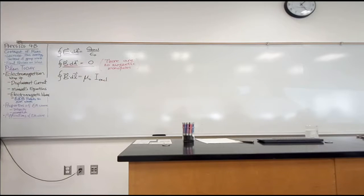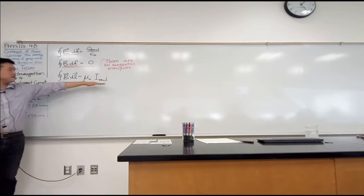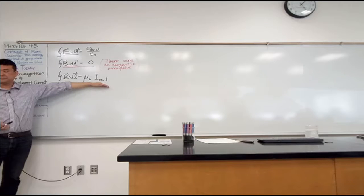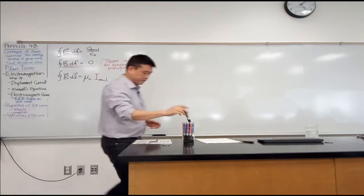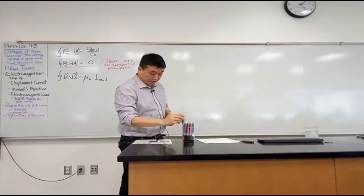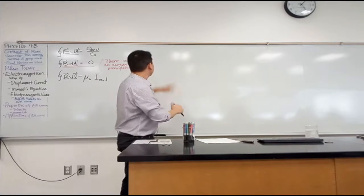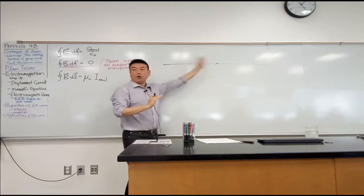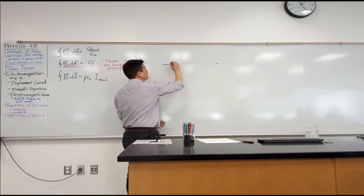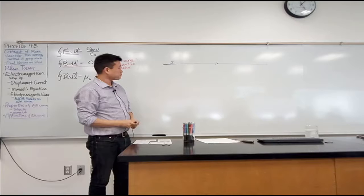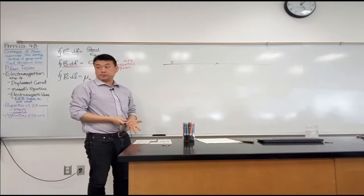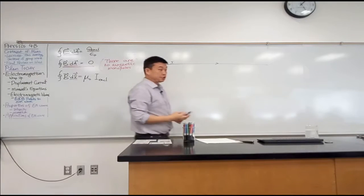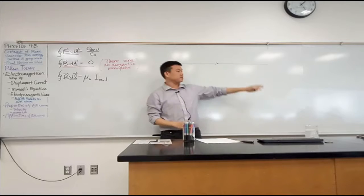And we spent a fair amount of time talking about what it means for current to be enclosed. Do you remember? So let me draw this as an example. Suppose I have a current that's going from left to right. So it's just an infinite long line of current, i. How would I choose a loop that would be basis of this integral here? How would I choose a loop that somehow encloses this current?